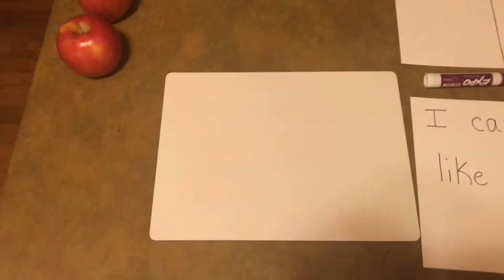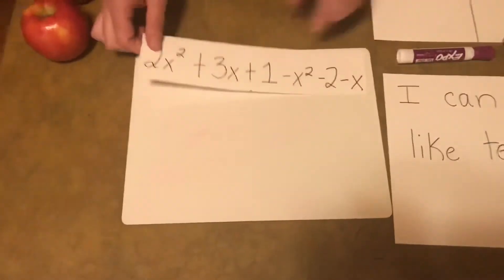We've been doing a lot of things with numbers and variables and exponents, and today we're going to think about combining like terms. So our goal is I can combine like terms. At the end of class, this is what we're going to get to.